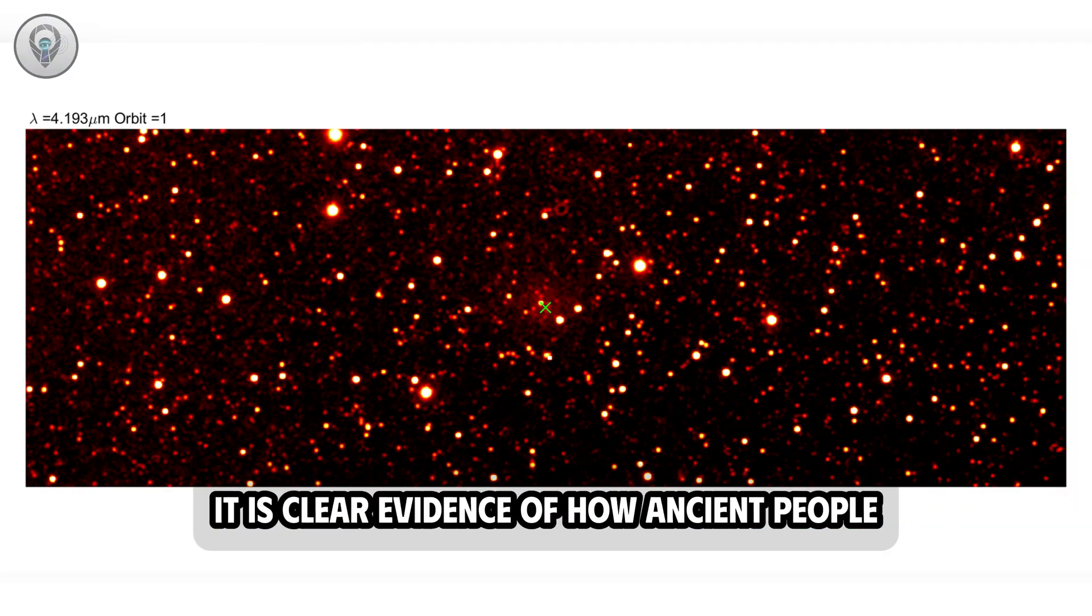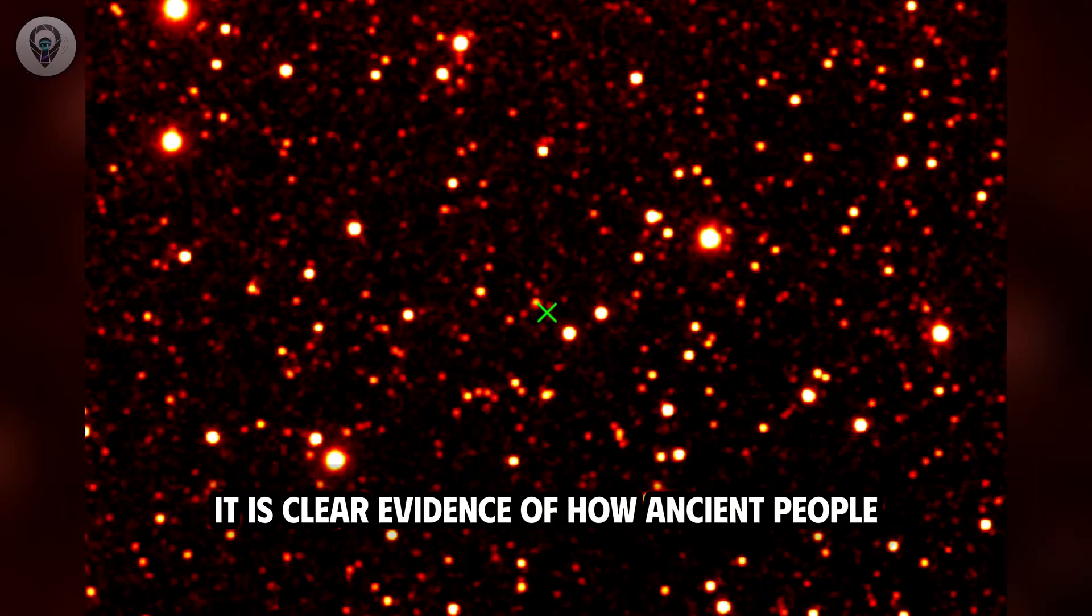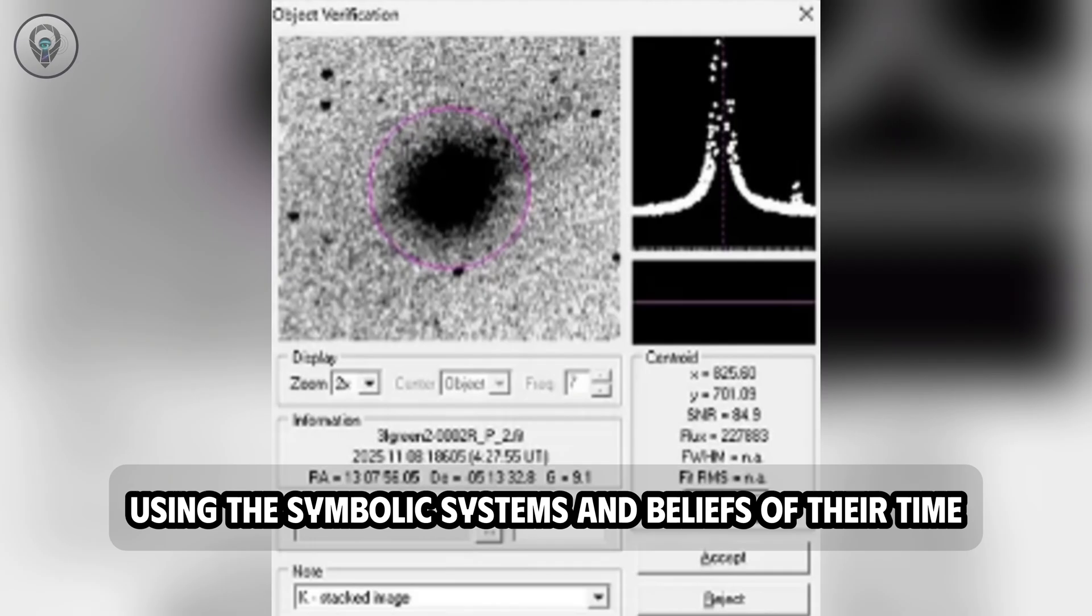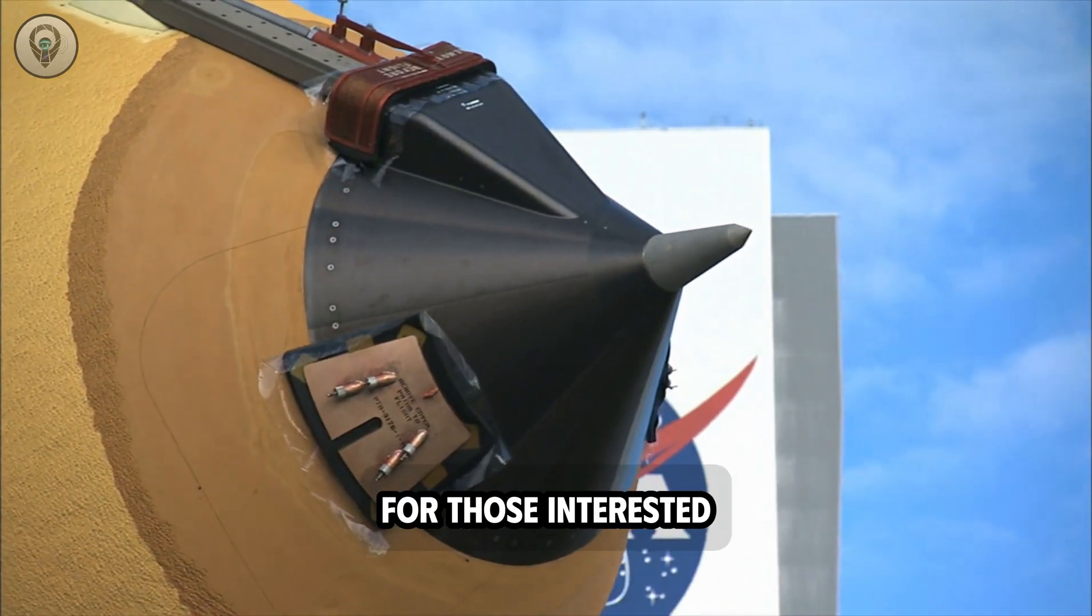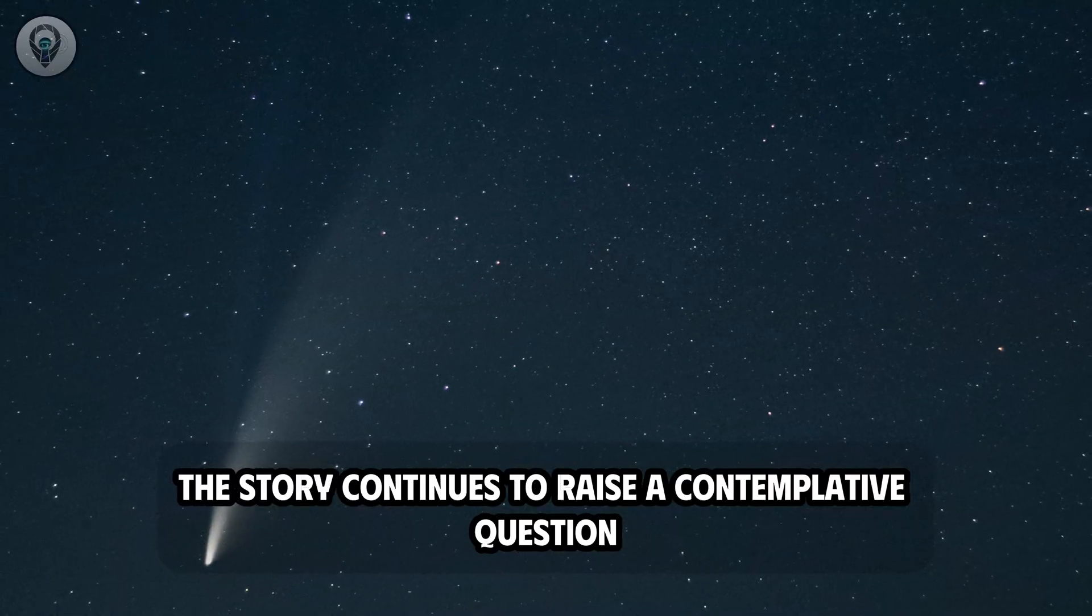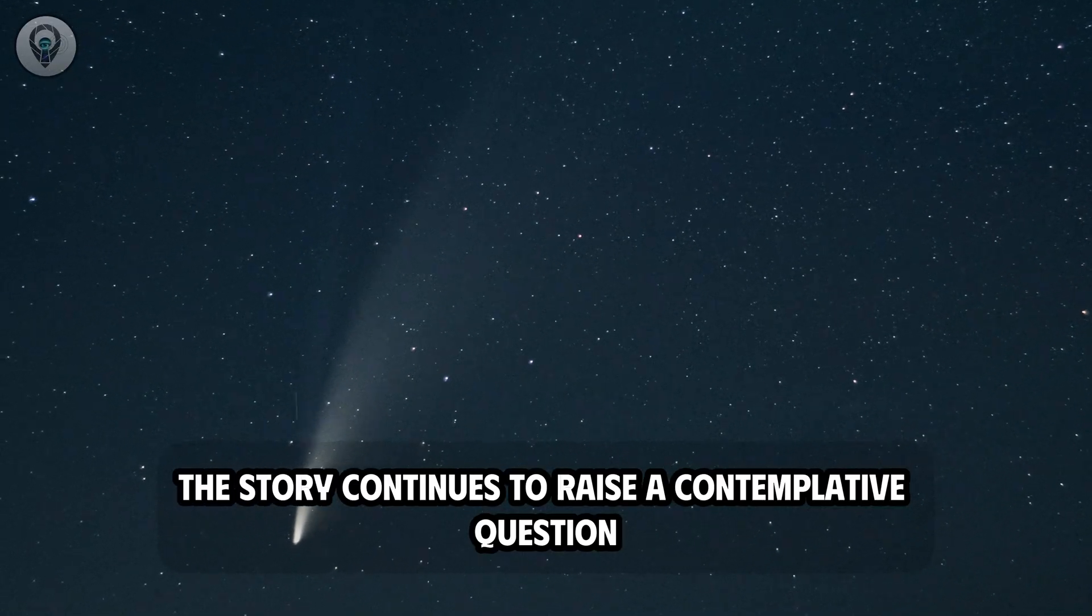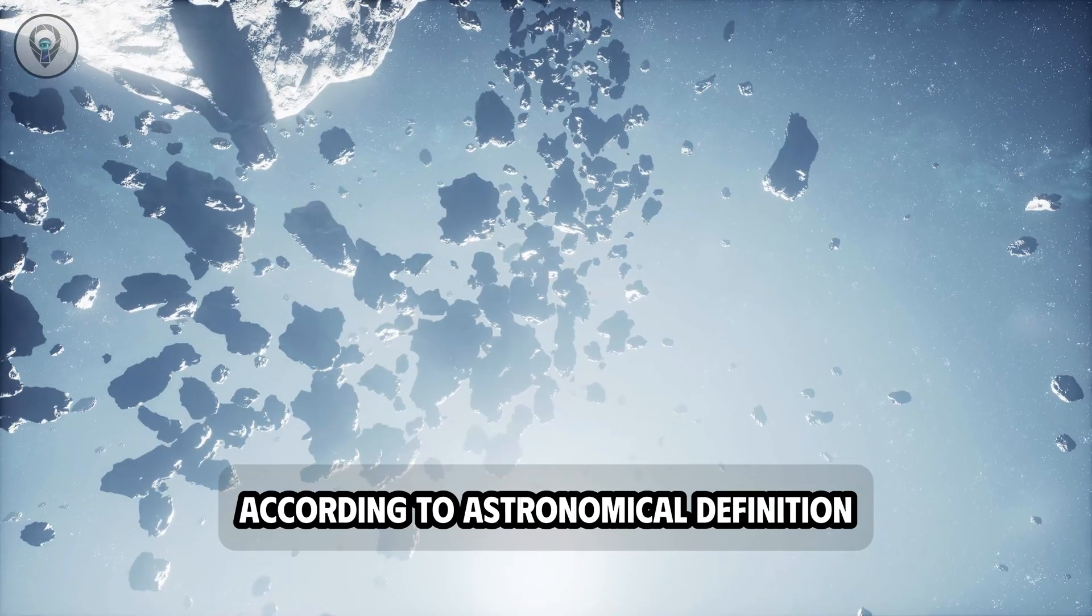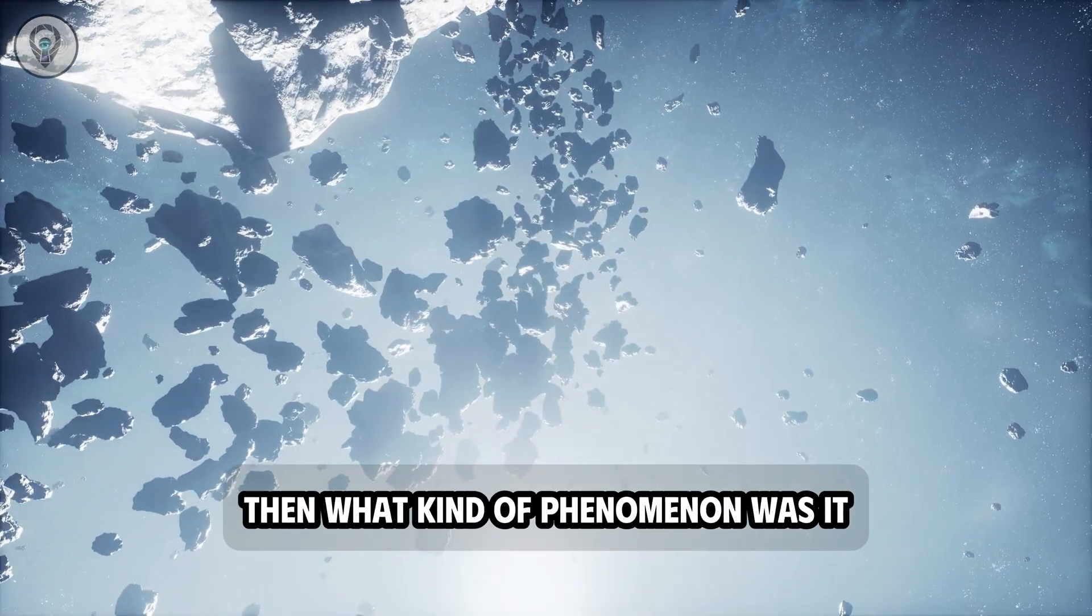For academics, it is clear evidence of how ancient people recorded natural phenomena using the symbolic systems and beliefs of their time. For those interested in the relationship between science and religion, the story continues to raise a contemplative question. If the star of Bethlehem was not a typical star according to astronomical definition, then what kind of phenomenon was it?